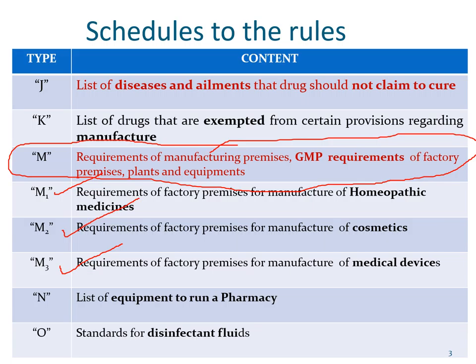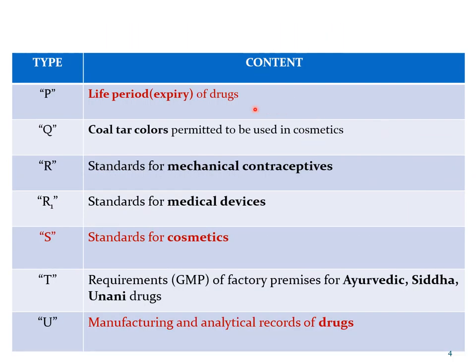Similarly, Schedule N is very important — it gives a list of equipment necessary to run a pharmacy. Schedule O gives the standards for disinfectant liquids. Schedule P is another important schedule as far as we are concerned because it gives the shelf life, or life period, or expiry period of drugs.